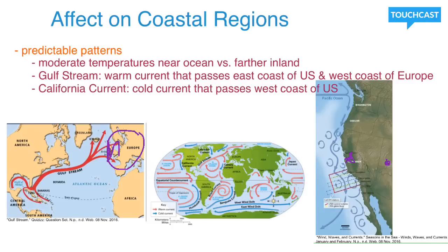The California Current does the opposite. It travels along the west coast of the United States and is a cold current, so it originates at the poles. It has the opposite effect — bringing cooler temperatures to the west coast of the United States, and there are fewer thunderstorms because of this cold current passing through.